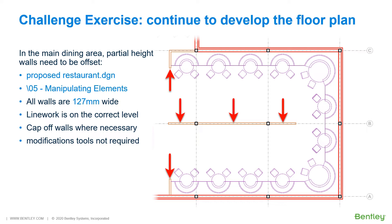In the main dining area, there are single line partial height walls that need to be offset. All walls are 127 millimeters wide. Ensure that all the line work is on the correct level and add lines where necessary to cap off walls. Using modification tools to trim and extend at this point is not required. Modify tools are covered in the next module.